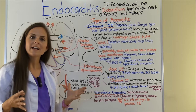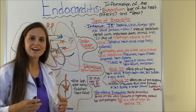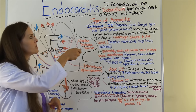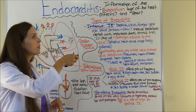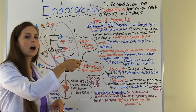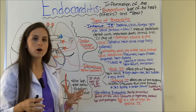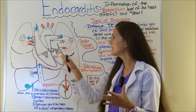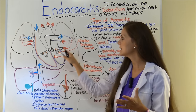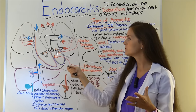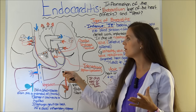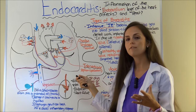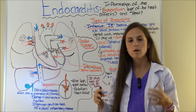First, let's talk about what endocarditis is. It is inflammation of the endocardium layer of the heart. The endocardium layer is a membrane that lines the inside of the chambers of your heart, and it's found over your heart valves as well.